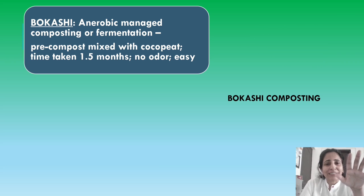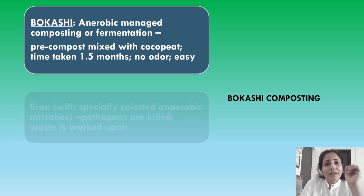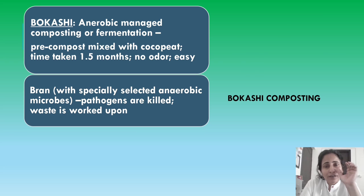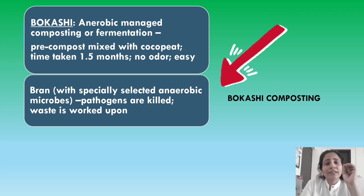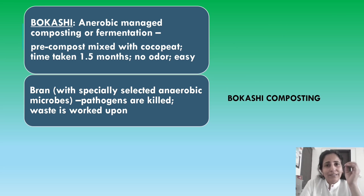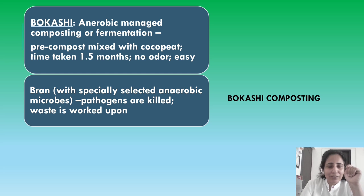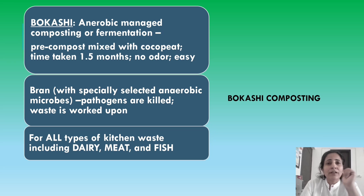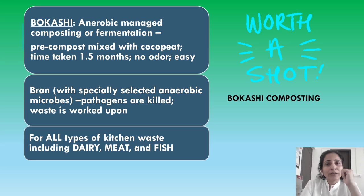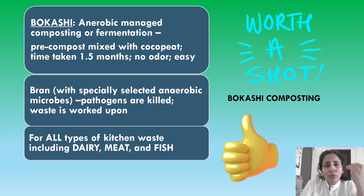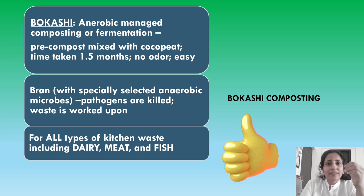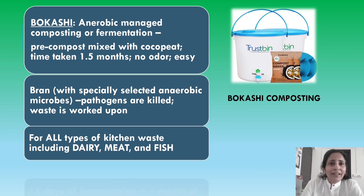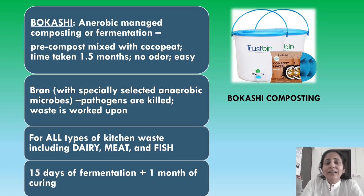Bokashi composting works because it uses a bran given with the bins, which has specially selected anaerobic microbes. These microbes not only decompose waste that is not properly decomposed in aerobic composting but also kill the pathogens. The waste it handles includes all types of kitchen waste — dairy, meat, and fish — which we generally do not include in aerobic home composting. Since it's a closed setup, there's no chance of odor slipping out or pests coming in. We will talk about bokashi composting more when we discuss composting gears later in this video.